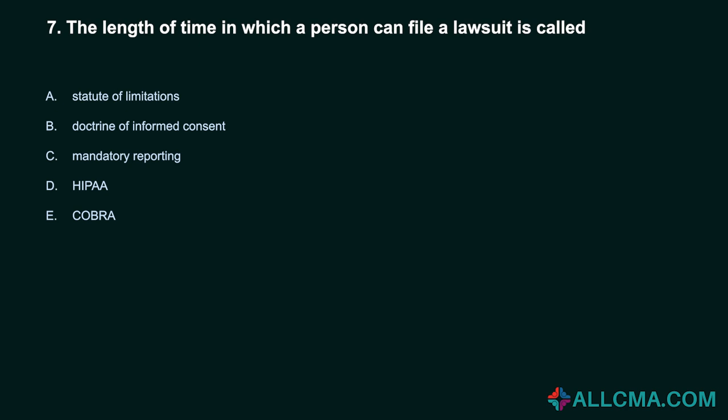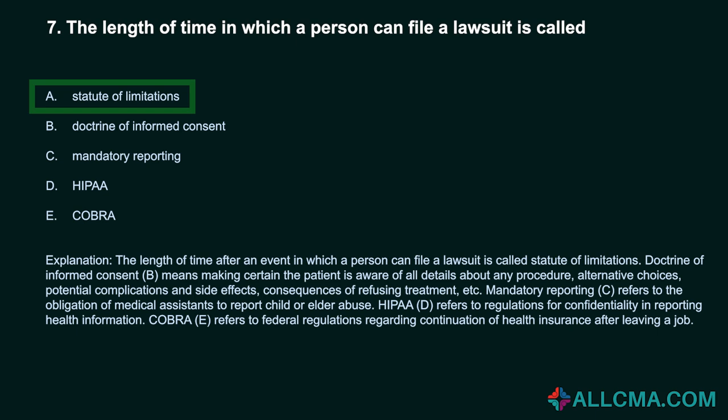Question 7: The length of time in which a person can file a lawsuit is called: A. Statute of limitations. B. Doctrine of informed consent. C. Mandatory reporting. D. HIPAA. E. COBRA. Correct answer: A. Statute of limitations. The doctrine of informed consent means making certain the patient is aware of all details about any procedure, alternative choices, potential complications and side effects, and consequences of refusing treatment. Mandatory reporting refers to the obligation to report child or elder abuse. HIPAA refers to regulations for confidentiality in reporting health information. COBRA refers to federal regulations regarding continuation of health insurance after leaving a job.